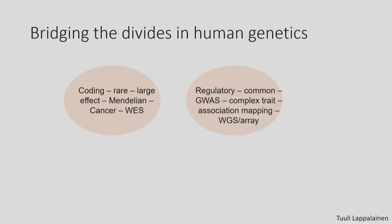One thing I wanted to bring up, which has been implicitly mentioned, especially in Judy's talk, is that ever since the days of Mendel and Galton, in human genetics there has been this persistent divide into studies of rare severe diseases and common complex diseases. There's a focus on coding rare variants with large effects studied by exome sequencing in the context of Mendelian disease and cancer, and then the GWAS community looking at common variants in non-coding regions, regulatory effects, GWAS mapping with SNP arrays and genome sequencing technologies.